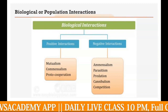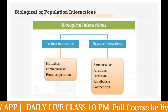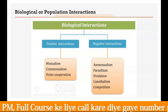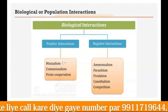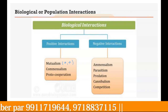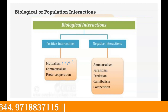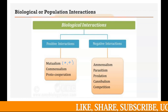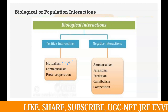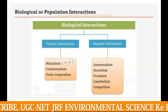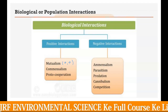In positive interactions we have seen three types. The first is mutualism, in which both species get benefited and this relationship is obligatory or necessary for the survival of both. For example, Rhizobium cannot survive alone without leguminous plants, and leguminous plants require Rhizobium in their root nodules to get nitrogen from the soil.